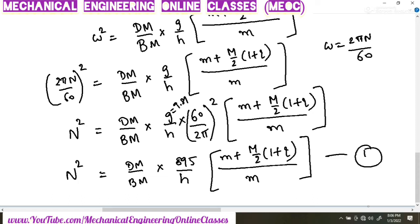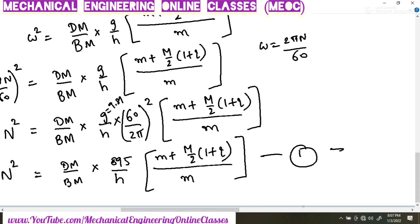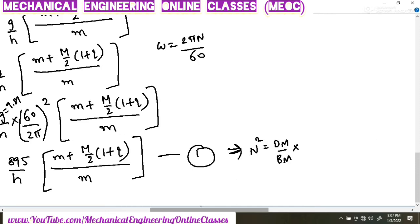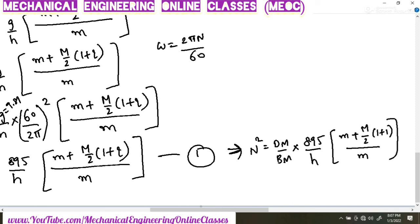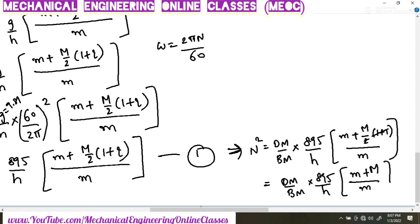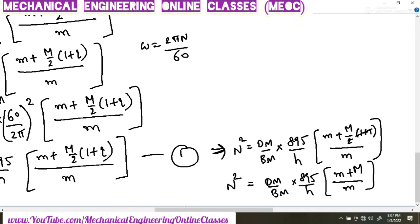For the special case where alpha equals beta, q equals 1. Then N² = (DM/BM) × (895/H) × [m + (M/2)(1 + 1)] / m. The 2s cancel, giving: N² = (DM/BM) × (895/H) × (m + M) / m. Let this be equation number 2.